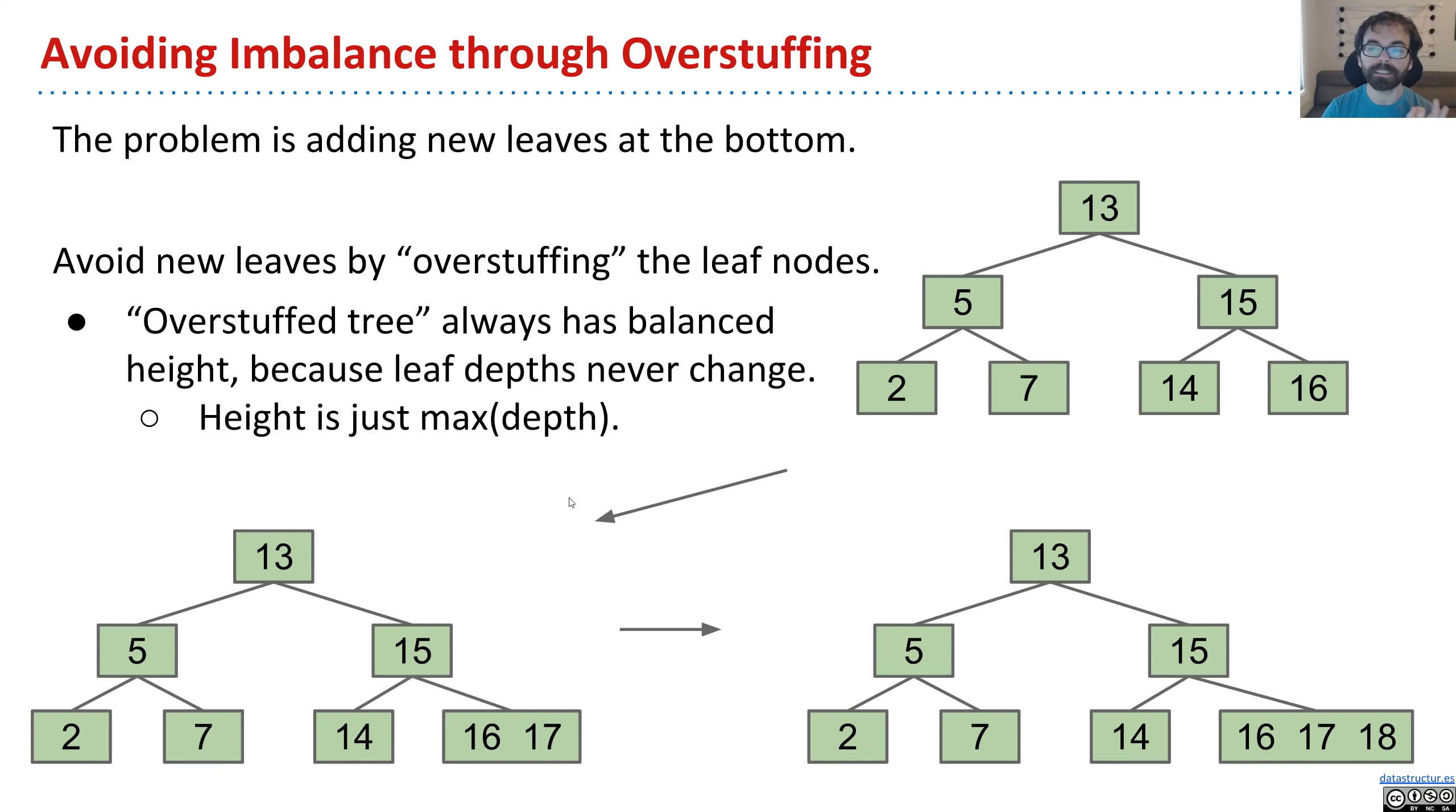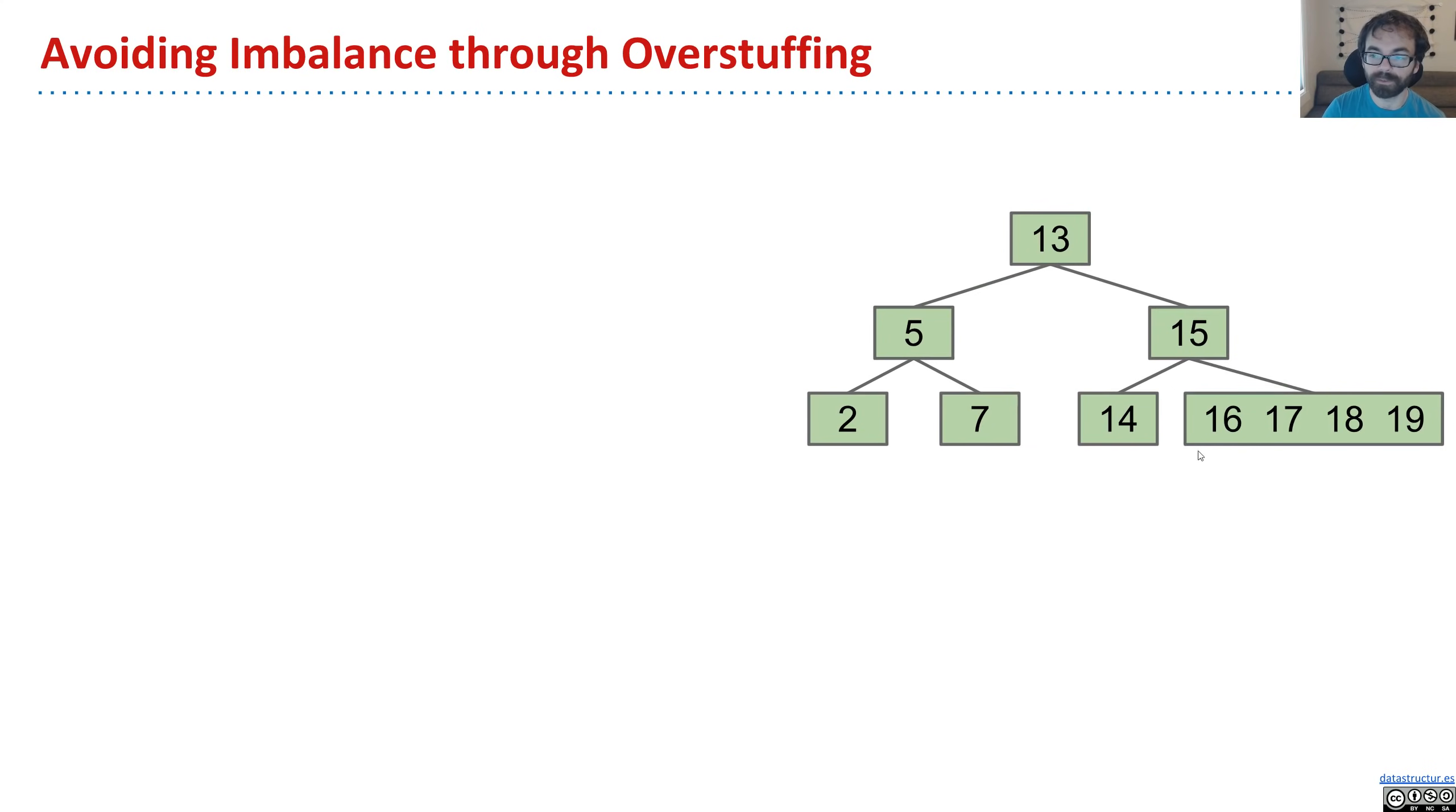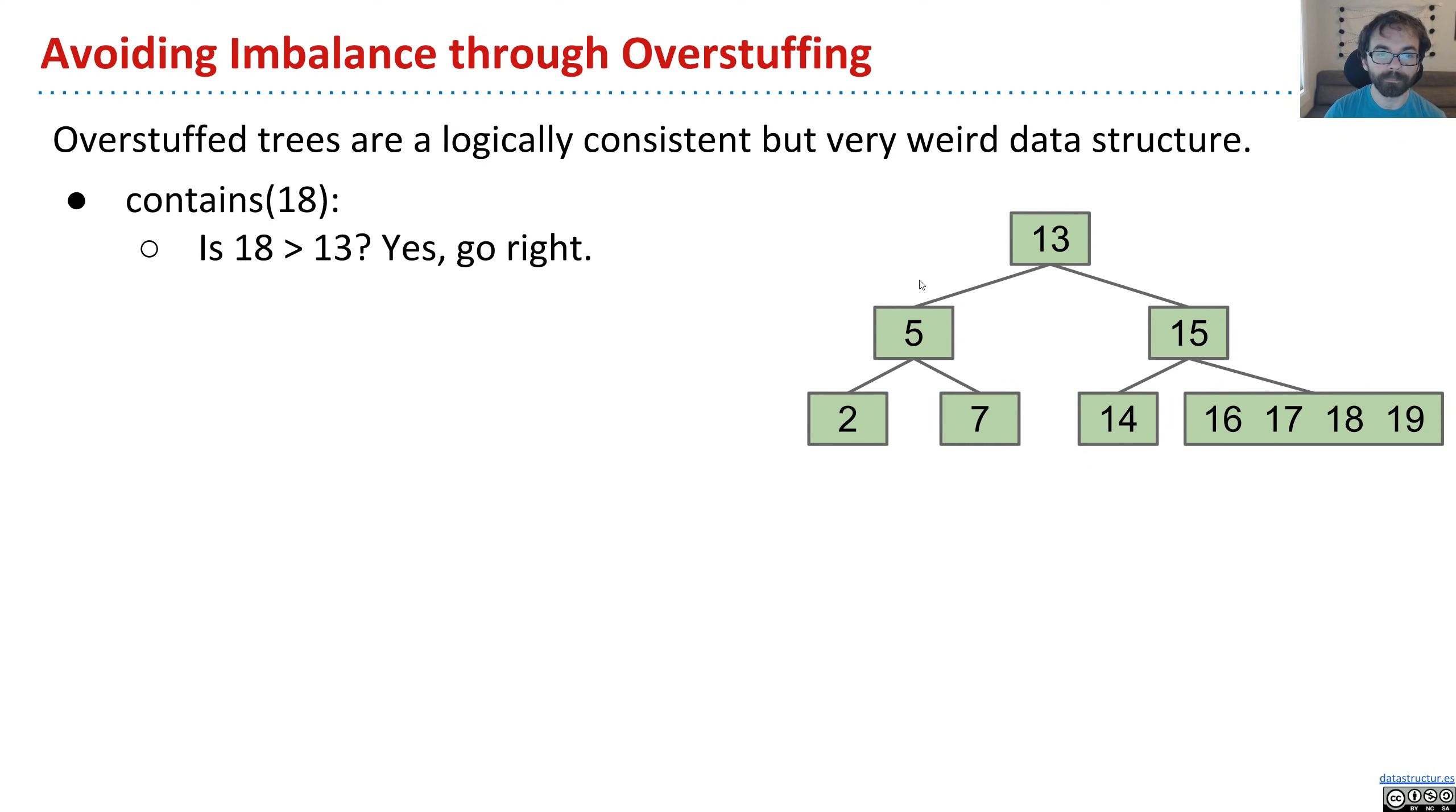Now let's reflect a little bit on whether or not this data structure actually even makes sense. So this is after I've added 19. And so I'll say this, it is a logically consistent but very strange data structure. But the operations work. So imagine that we're thinking of this as a set, and we say, does the tree contain 18? So we look at 13, and we say, we're looking for 18, so we go right.